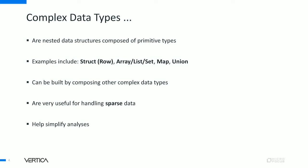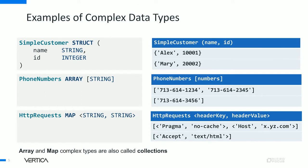Complex data types are very useful for handling sparse data — we have some examples of that use case in this presentation — and they also help simplify analysis. Looking at some examples: the first example on the left shows a simple customer type, which is of type struct with two fields — field name of type string, and field ID of type integer. Structs are nothing but a group of fields, and each field has a type of its own. The type can be primitive or another complex type. On the right, we have some example data for this simple customer complex type.